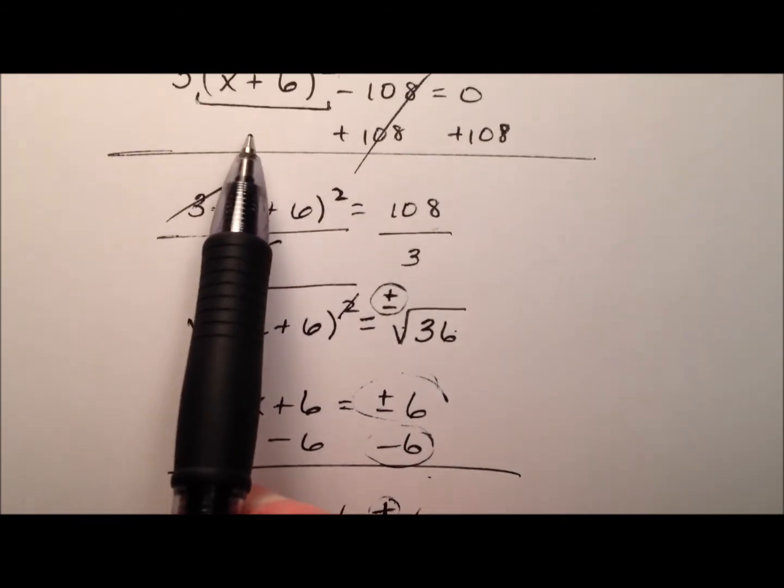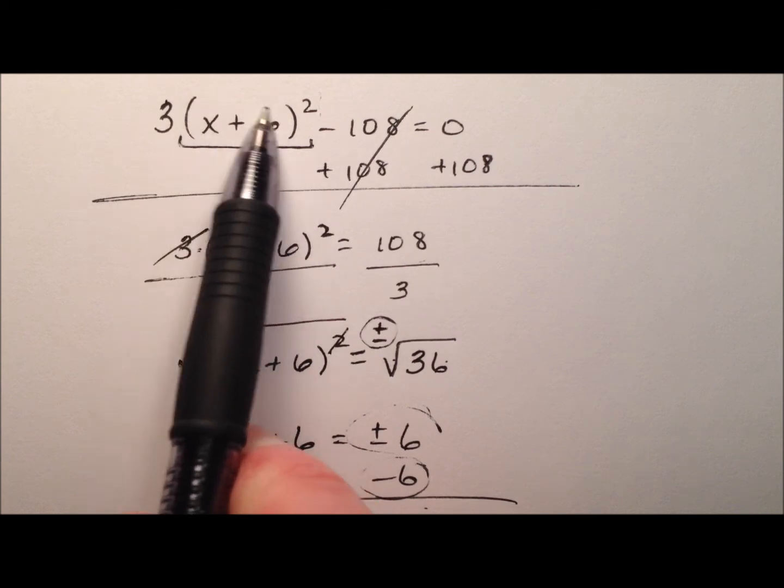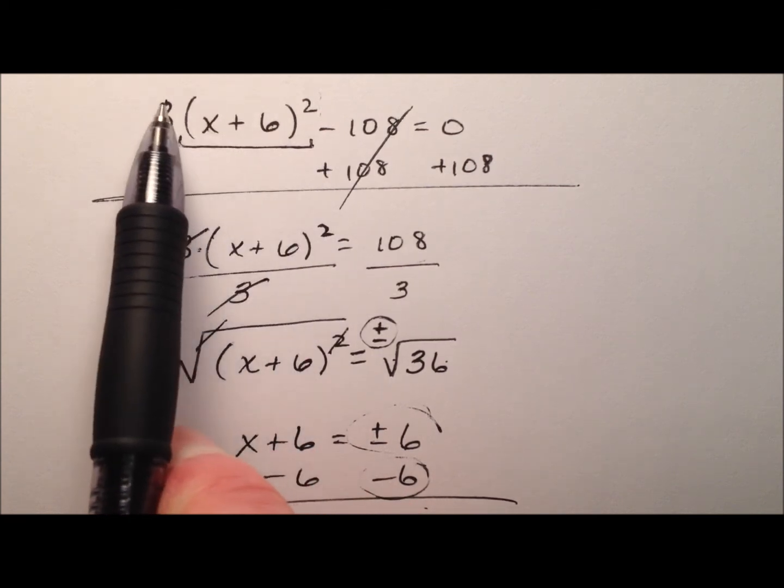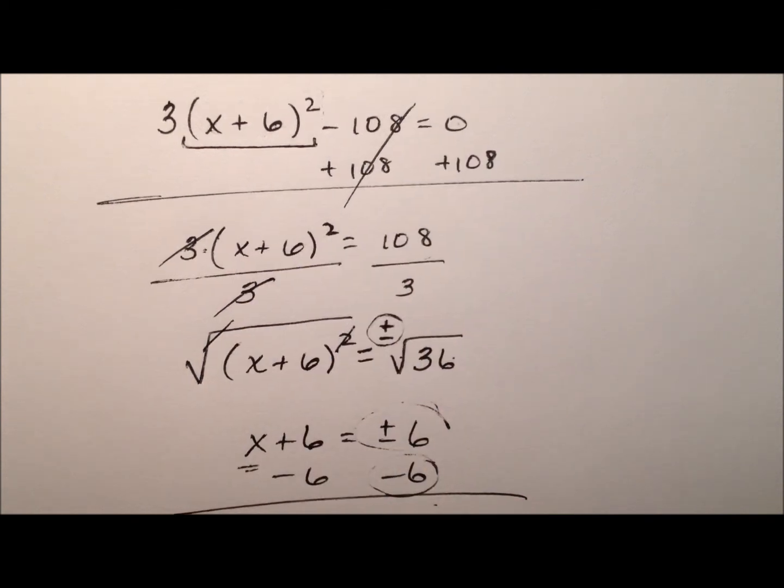We can plug them back in. So 0 plus 6, that's 6 squared is 36. 3 times 36 is 108. And when I subtract 108, I do get 0.